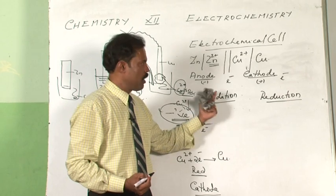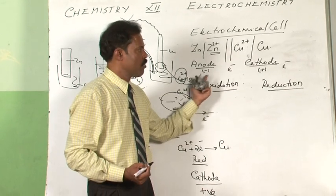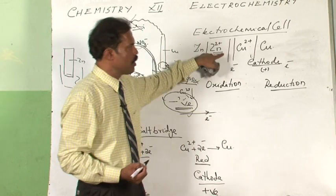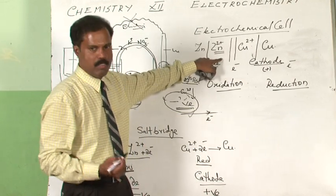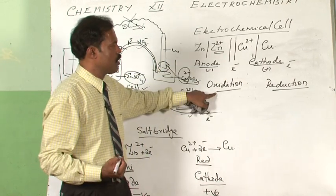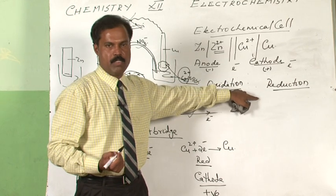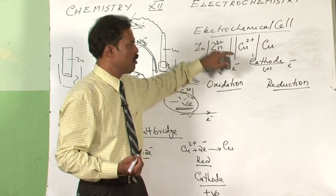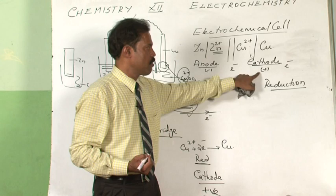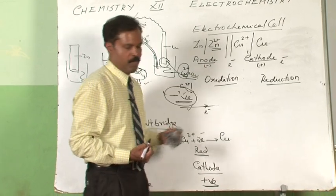A cell should always be represented in this particular fashion because this is a convention. From the representation of the cell itself we will understand where oxidation is taking place and where reduction is taking place, because a cell is always represented with reduction on the right hand side and oxidation on the left hand side.